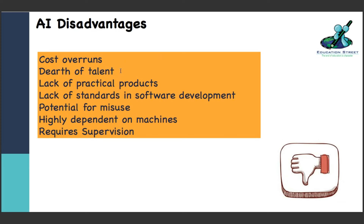Potential for misuse - there's a huge threat that companies might build something which goes out of their control, and that's why everyone is using this carefully. Highly dependent on machine - that could be a future where we might get very dormant, which is also a huge threat. Requires supervision - Elon Musk is asking governments to bring in laws and governance over AI applications. We don't want it to go out of hand.